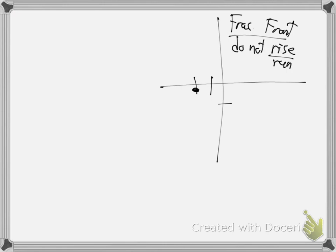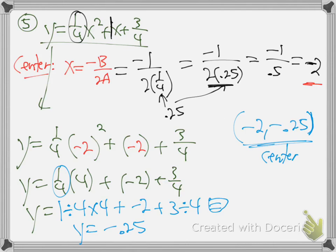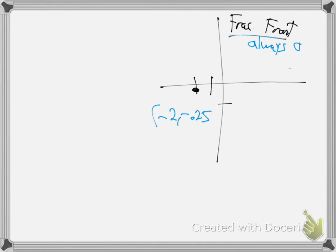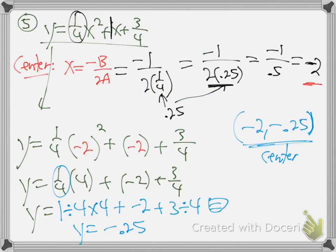Whenever you have fractions and you have an equal sign, multiply both sides by 4 - or whatever the denominator is. Now you can do the diamond on that. So the diamond: what multiplies to be 3 and adds to be 4? One and three. Both positive to add to be 4. So it's going to be x plus 1, times x plus 3. So the answers are just going to be negative 1, negative 3 - those are the x-intercepts.